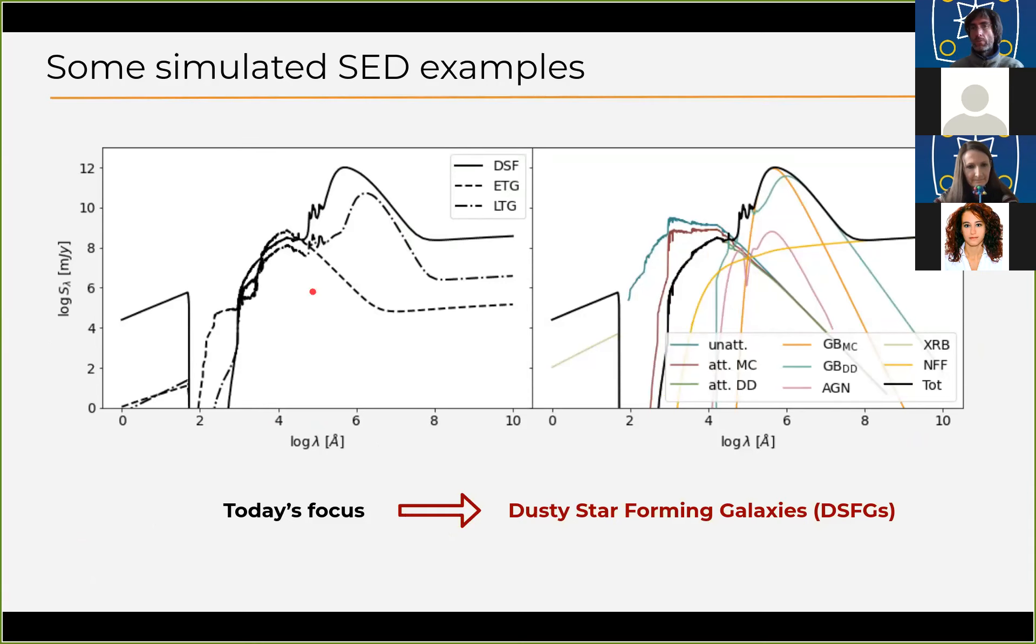I can show you some examples of SEDs produced with our library for different characteristic galaxy populations. We have the emission from early-type galaxies, the emission for an example late-type galaxy, and in the solid line, the emission of a dusty star-forming galaxy. I would like you to notice that the wavelength range that we can cover spans from 10^1 to 10^10 angstrom. On the right plot, I'm decomposing the spectral energy distribution into the several components that build it up.